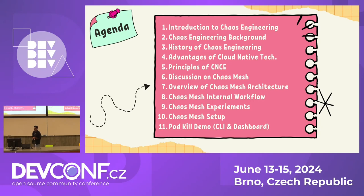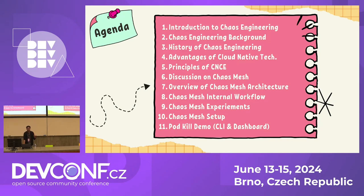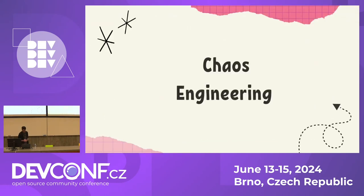These are today's agenda. We'll discuss chaos engineering — what it is, from the very key points, and how we can do this in a real-life production environment. I'll discuss the background and history of chaos engineering, how chaos evolved. Then principles of cloud native chaos engineering, how it's linked with cloud native architecture. We'll look at tools — I've selected Chaos Mesh since it's open source. I'll also show demos on how to implement Chaos Mesh using the dashboard and CLI.